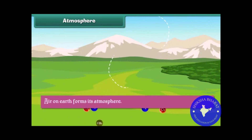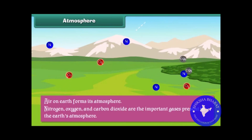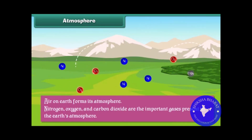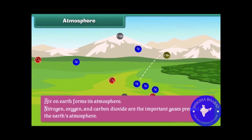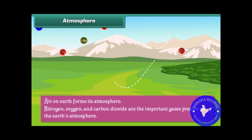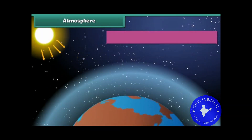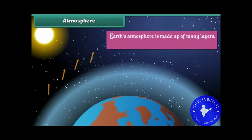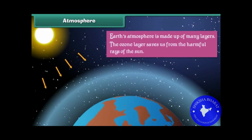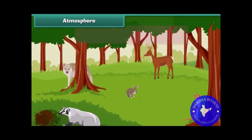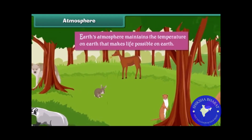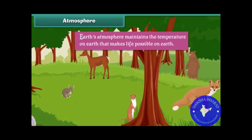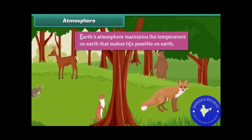Air on Earth forms its atmosphere. Nitrogen, oxygen, and carbon dioxide are the important gases present in Earth's atmosphere. Earth's atmosphere is made up of many layers. The ozone layer saves us from the harmful rays of the Sun. Earth's atmosphere also maintains the temperature on Earth, which makes life possible.